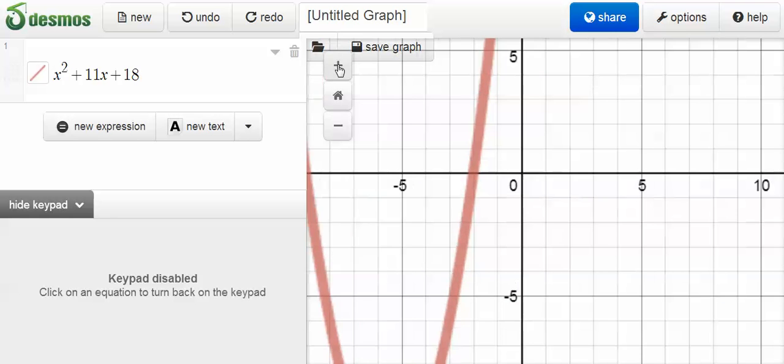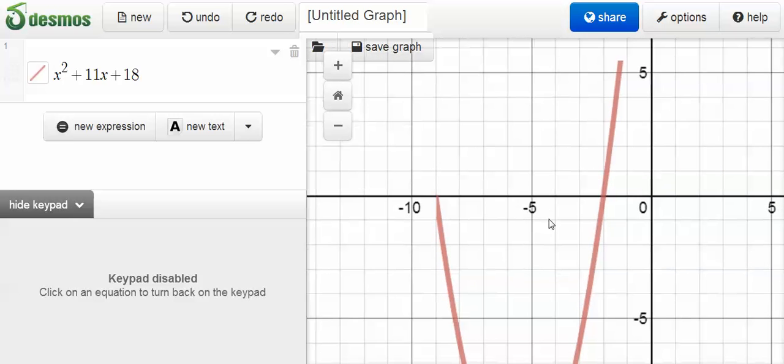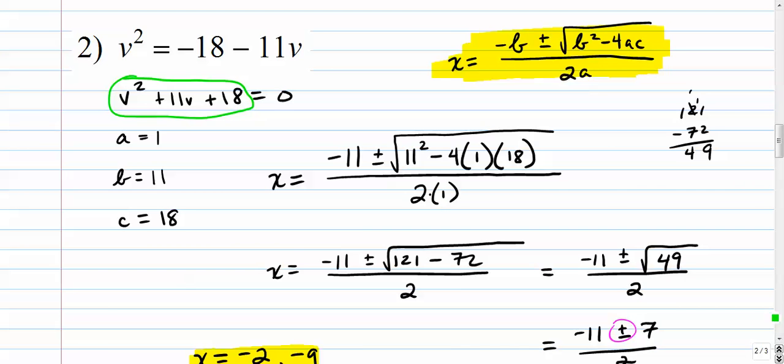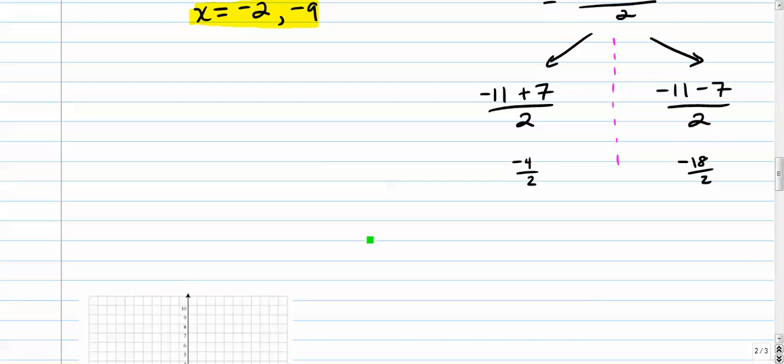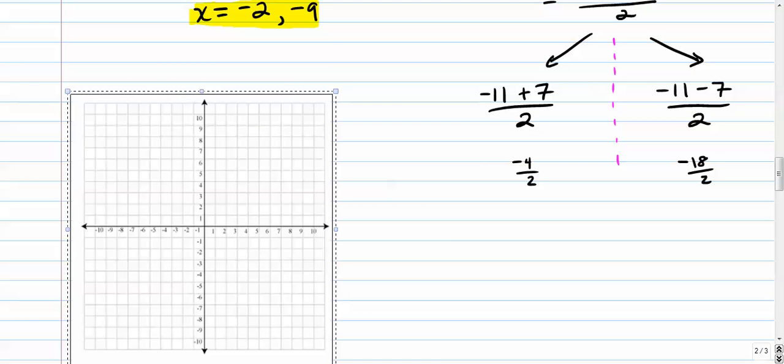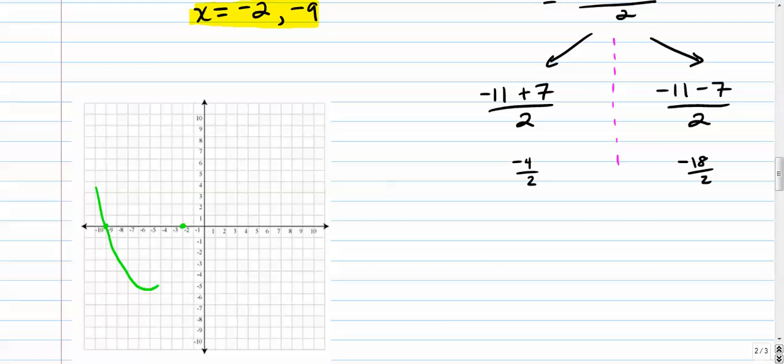All right, if you wanted to kind of examine that a little further, you can zoom back in. All right, negative 2 and negative 9. So when you go back to your graph, the graph is going to cross at negative 2 and negative 9, and it's going to be opened up, just like that. Again, two real solutions.